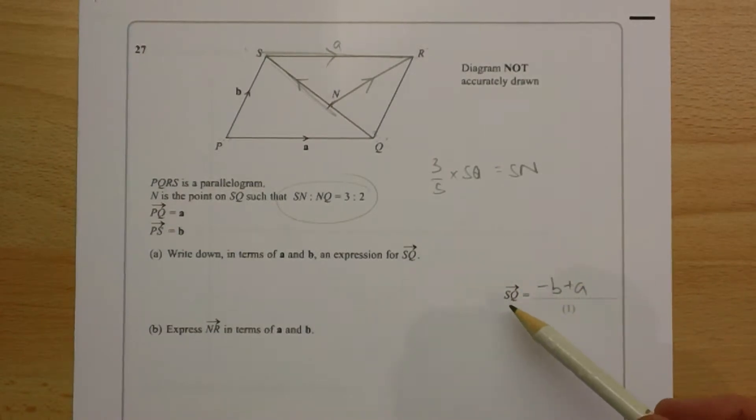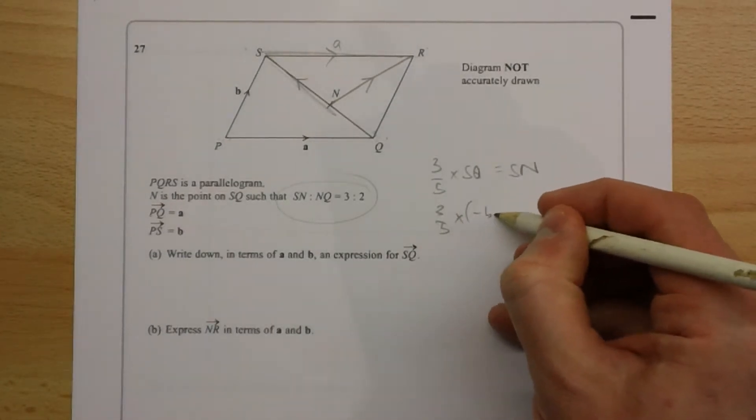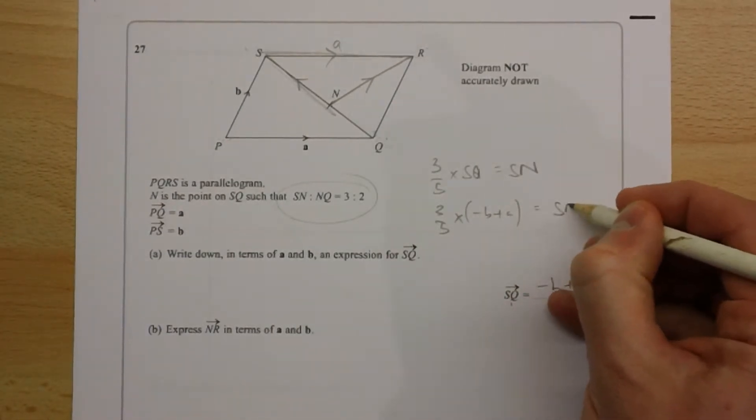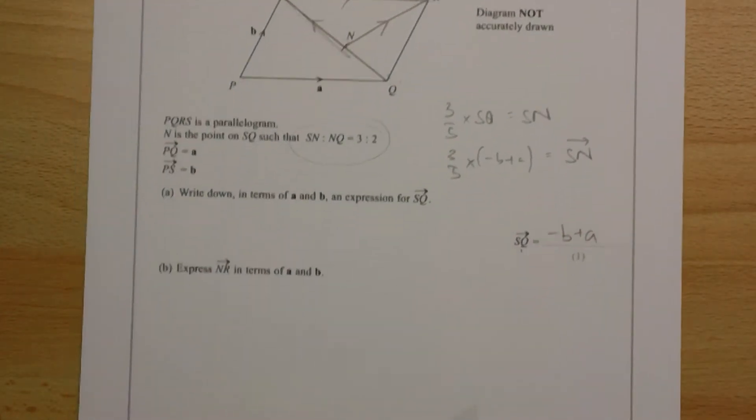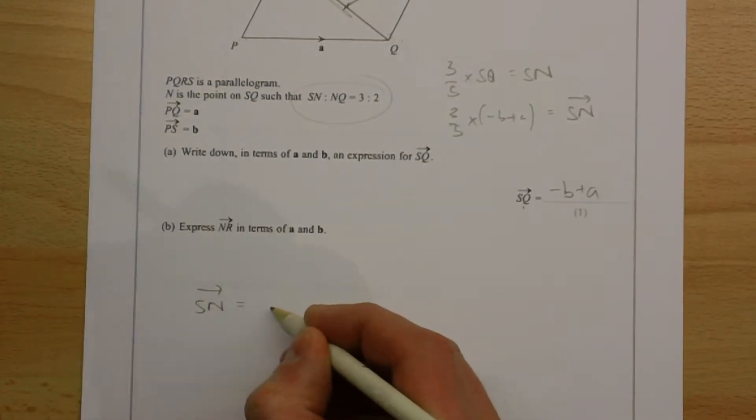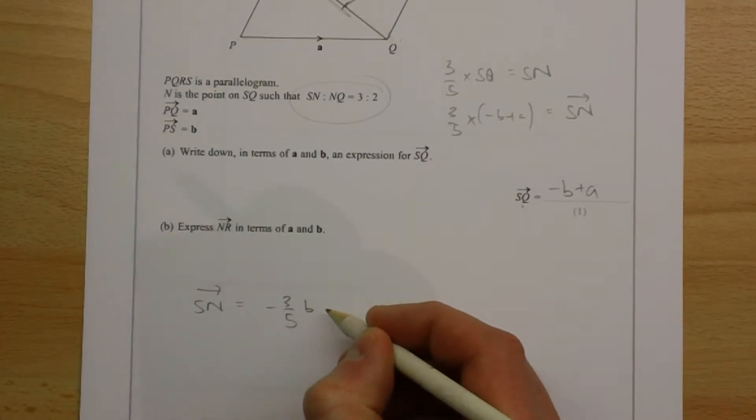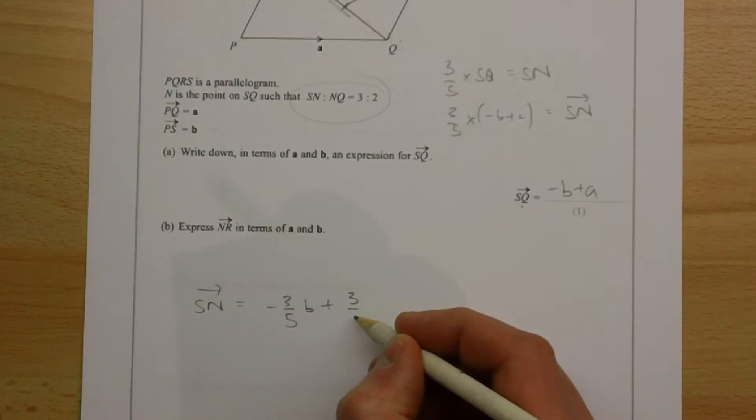And we know a vector from S to Q, so we can use this to work out the vector from S to N. And then multiply through, and you get that S to N is minus three-fifths B plus three-fifths A.